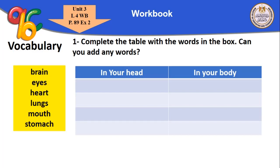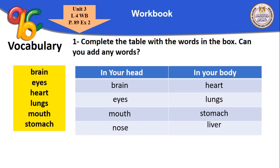Complete the table with the words in the box — can you add any words? Body organs: in your head we have brain, eyes, mouth, and we can add nose. In your body we have heart, lungs, stomach, and we can add liver.